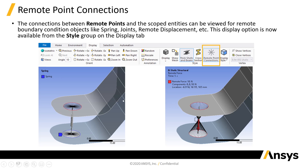The way to do that, you go to the display, and then there's a remote point connection tab, and that just allows you to show that visual spiderweb. Now remember, internally these are multipoint constraints — they are relations between degrees of freedom — but we often visualize that through this spiderweb so that we can see that the center point where we apply the remote force is linked to our application region, these edges of the holes.